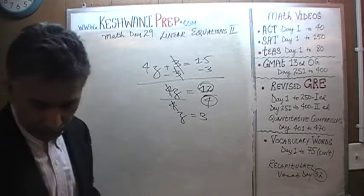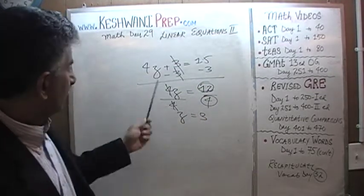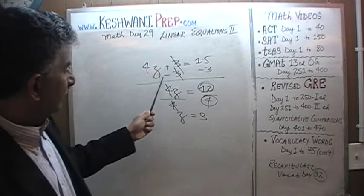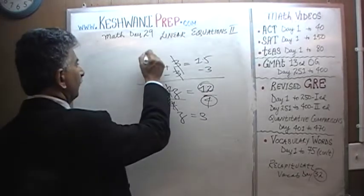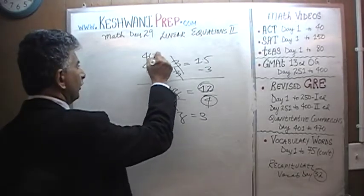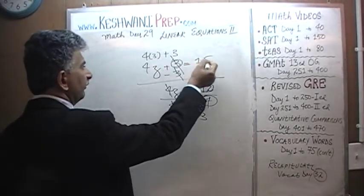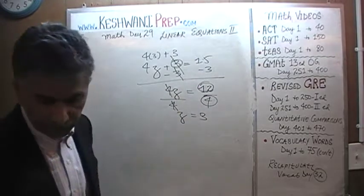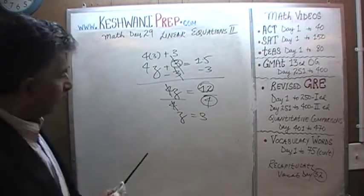And again you can put it back in there. 4 times 3 is 12. 12 plus 3 is 15. It works. Let's do the next one.